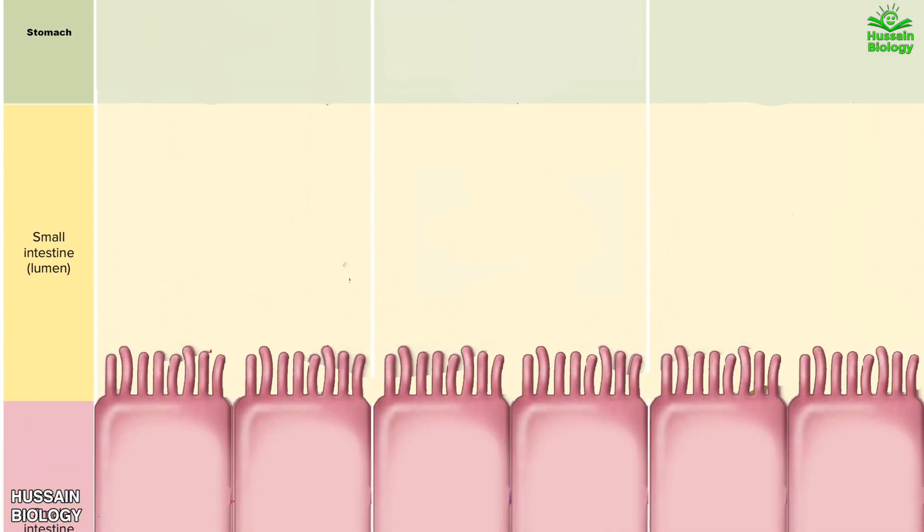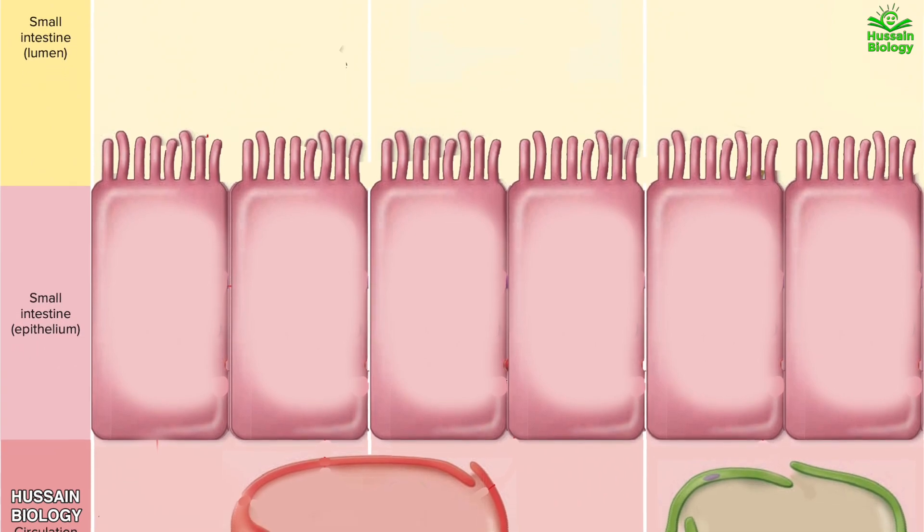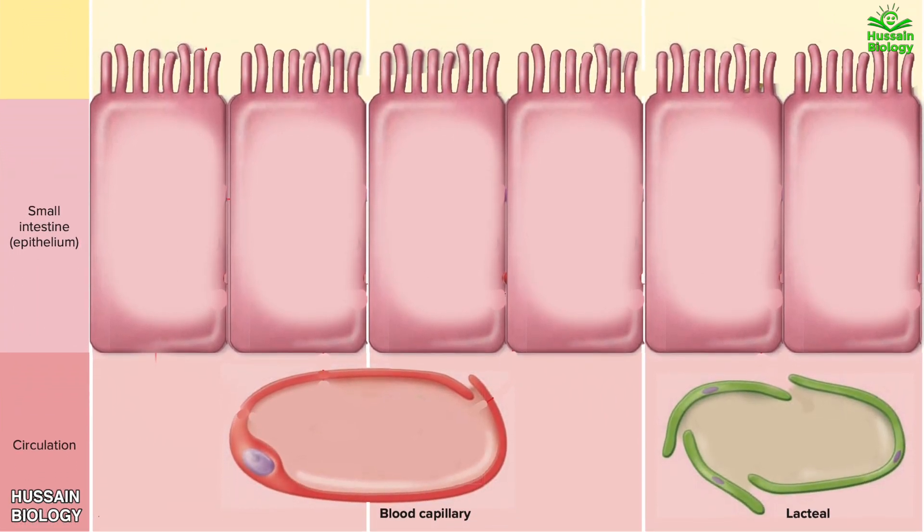Here in this diagram we have the site on the left which designates mouth, stomach, small intestine lumen, followed by small intestine epithelium and then circulation. And on the top we have the carbohydrate section followed by proteins and then fats.